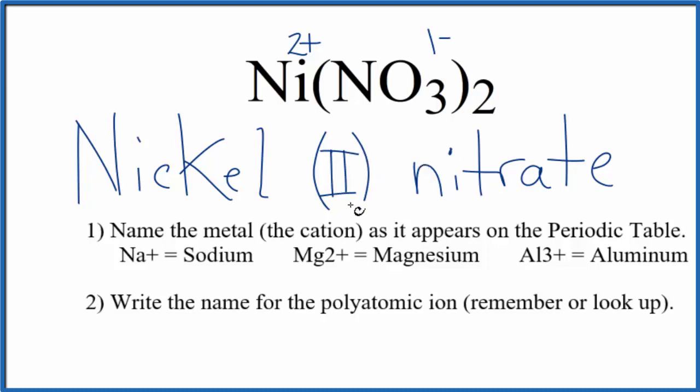If you're going to write the formula, you need to see this 2 here and know that nickel will be 2 plus, and then know that the nitrate ion is 1 minus. So you'd need two of them to balance the charge.